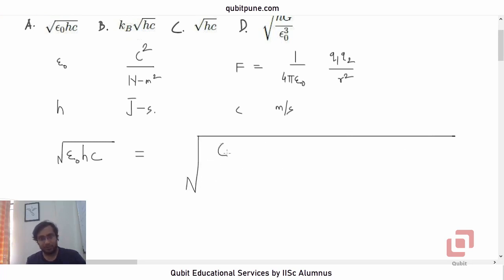Epsilon not Coulomb squared upon Newton meter squared, h joule second. Now h is joule second, but here nowhere we have used joule, so let us write joule as Newton meter, because work done measured in joules is dot product of the force and the displacement. So let us replace this joule by Newton meter, and then second is already there upon speed of light, that is meter per second.